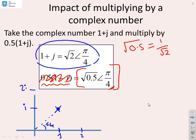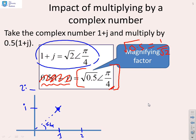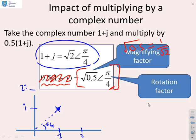So I'm going to multiply. You can see I've got a magnifying factor of 1 over root 2. In other words, I'm going to make it smaller. I've got a rotation factor of pi by 4, so I'm going to rotate in an anti-clockwise direction. There's my rotation by pi by 4.